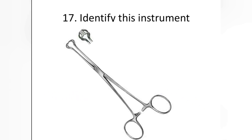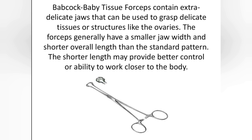You have to identify this instrument. The answer is: this is the Babcock Baby Tissue Forceps, or simply Babcock Tissue Forceps. It contains extra-delicate jaws that can be used to grasp delicate tissues or structures like the ovaries. The forceps generally have a smaller jaw width and shorter overall length than the standard pattern, which may provide better control when working closer to the body.